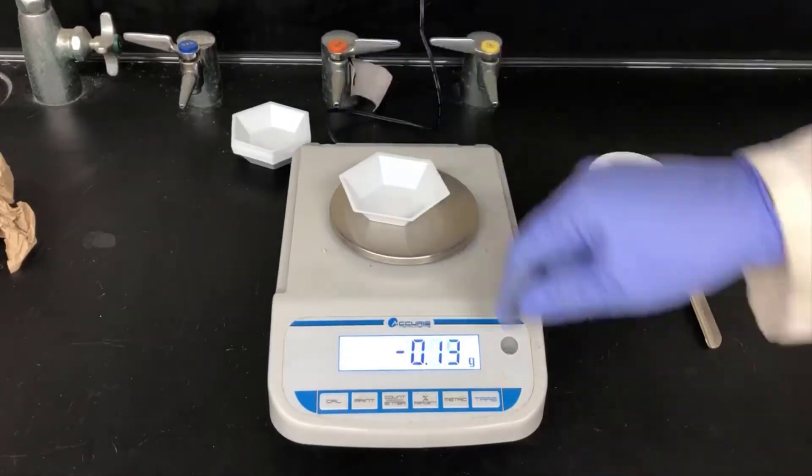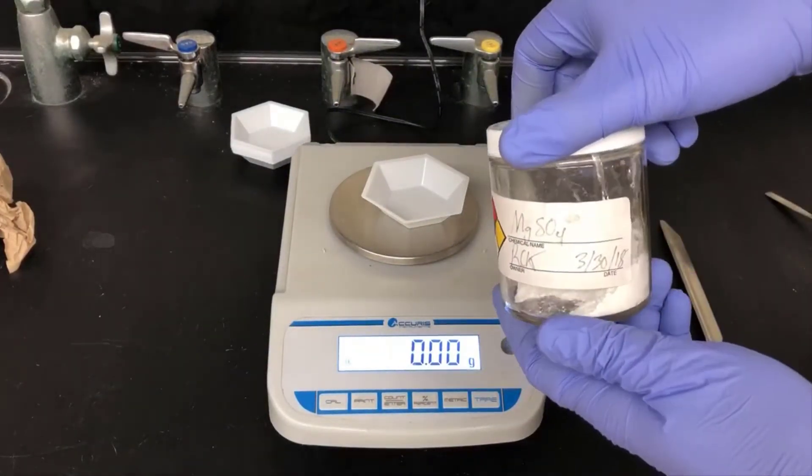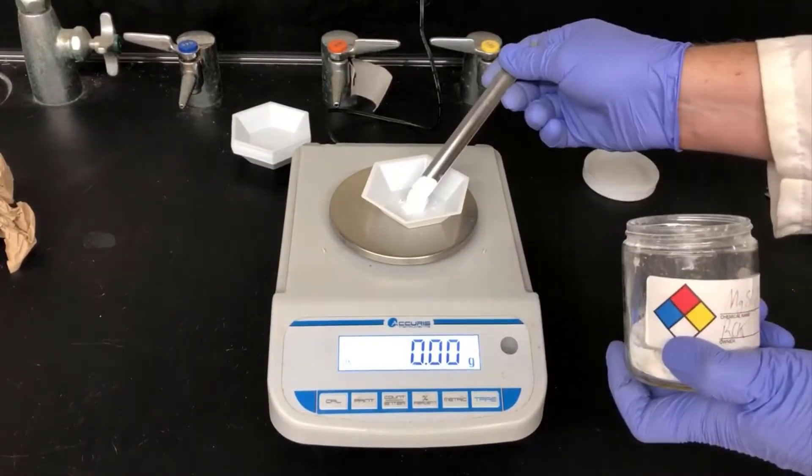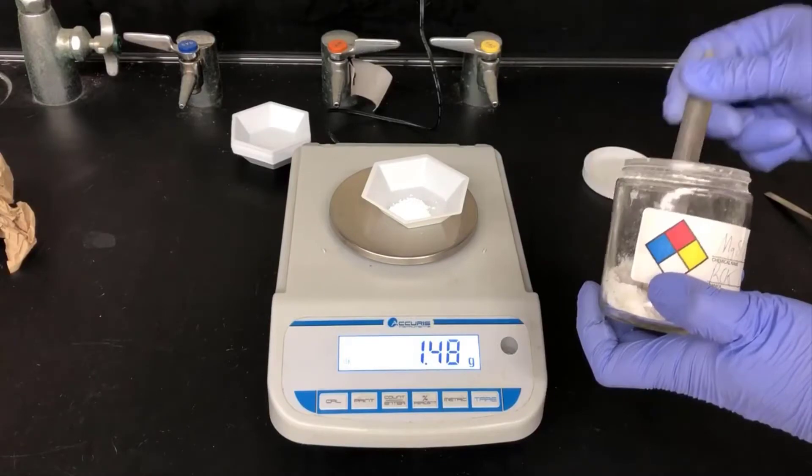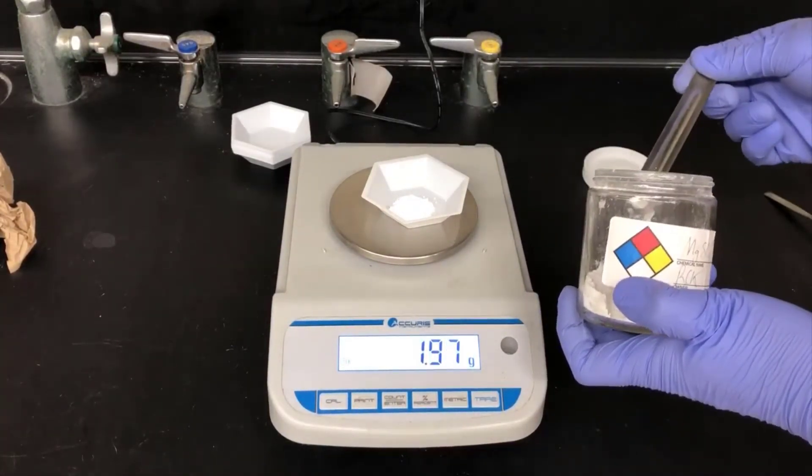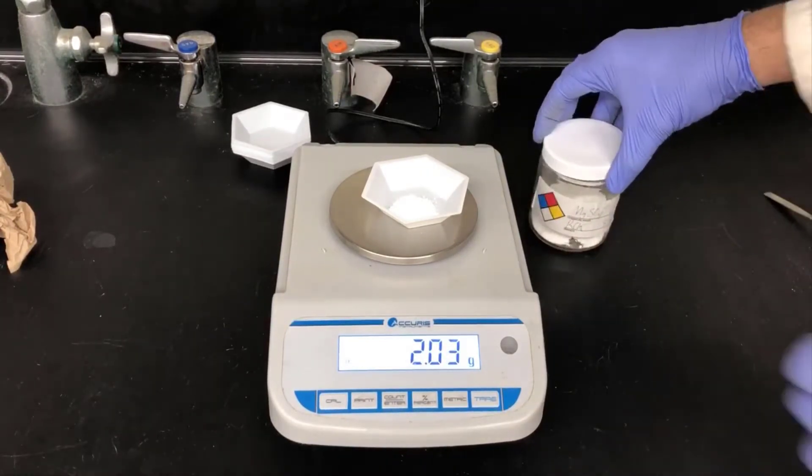Now I'm weighing out some magnesium sulfate, which is going to act as a drying agent. Magnesium sulfate has an affinity for water, and when we add it to the solution of ethyl acetate, it'll absorb any dissolved water that's in that solution. This is important because water causes problems later. I'm weighing out approximately 2 grams here. You don't have to get 2 grams exactly. If you get close, that's good enough.